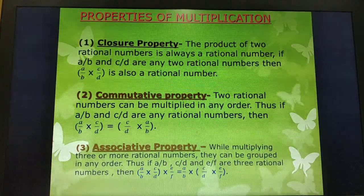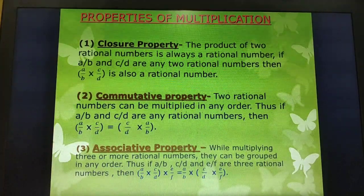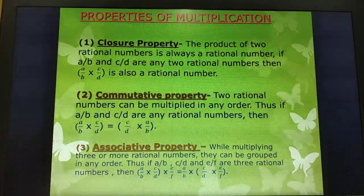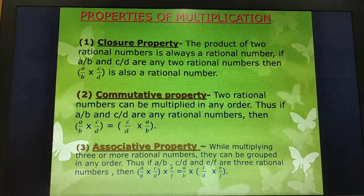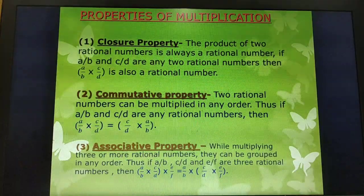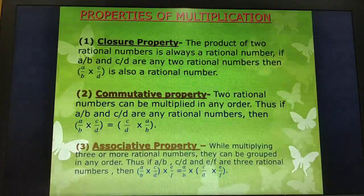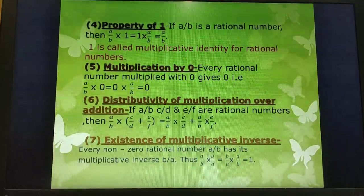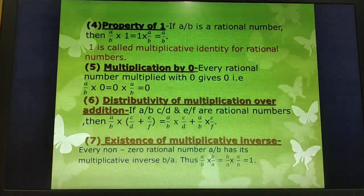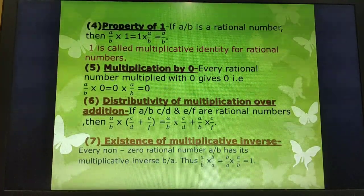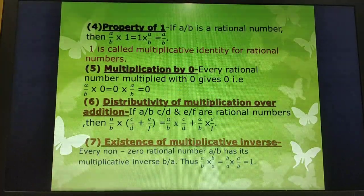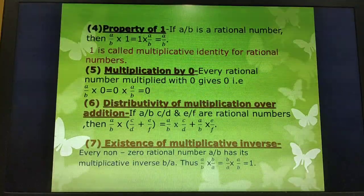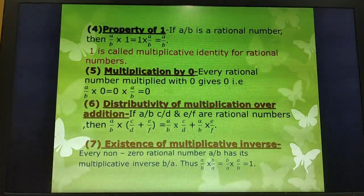Third is the associative property: while multiplying 3 or more rational numbers, they can be grouped in any order. Thus (A/B × C/D) × E/F = A/B × (C/D × E/F). Fourth is the property of 1: if A/B is a rational number, then A/B × 1 = 1 × A/B = A/B. If any rational number is multiplied by 1, the result is the same rational number. Therefore, 1 is called the multiplicative identity.